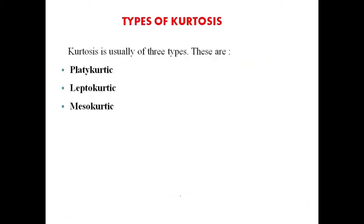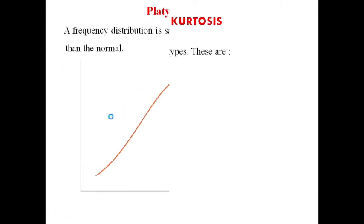Types of kurtosis: kurtosis is usually of three types — platycurtic, leptocurtic, and mesocurtic. Now we will discuss each with the help of a diagram.